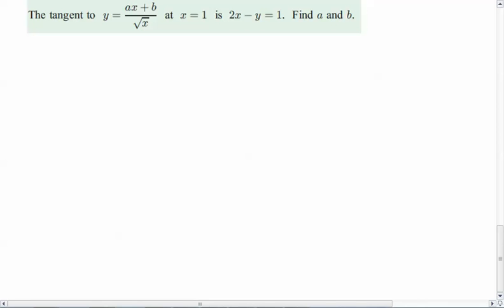All right, here we go. This is going to be my last video for tonight. I'm going to be doing the tangent to y equals ax plus b over root x at x equals 1 is 2x minus y equals 1, and asking us to find a and b. All right, so let's go ahead and see what we can do.